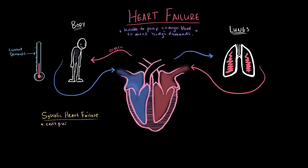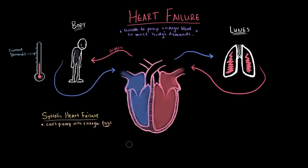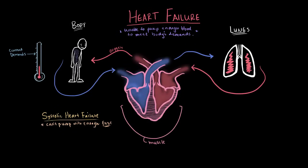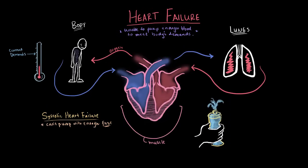Systolic heart failure is when the heart muscles aren't pumping blood with enough force. This often means those muscles are weakened and smaller than in a healthy heart, and when they contract, they don't squeeze as hard, causing less blood to be ejected with each contraction. Think of it like squeezing a water bottle — when the heart contracts, it squeezes the blood and that's how it ejects blood to both your body and your lungs.